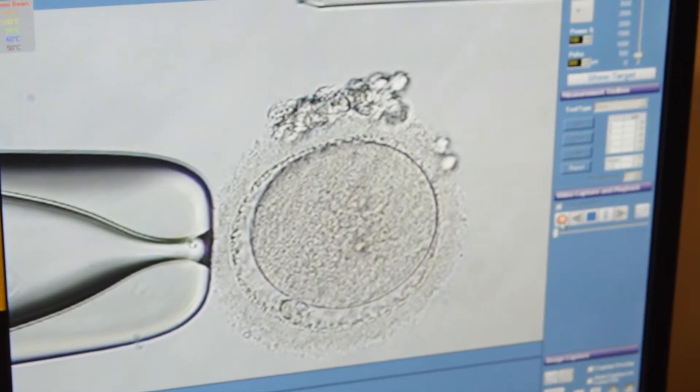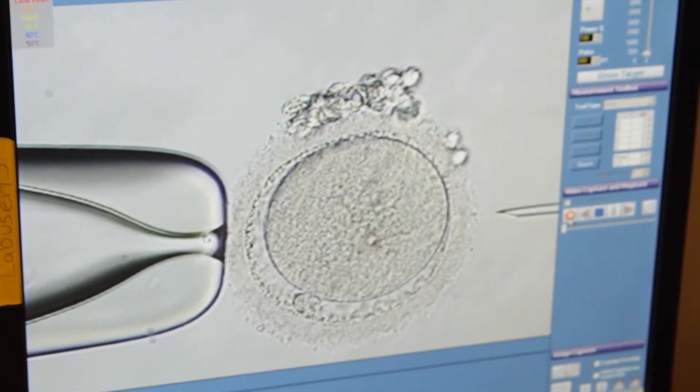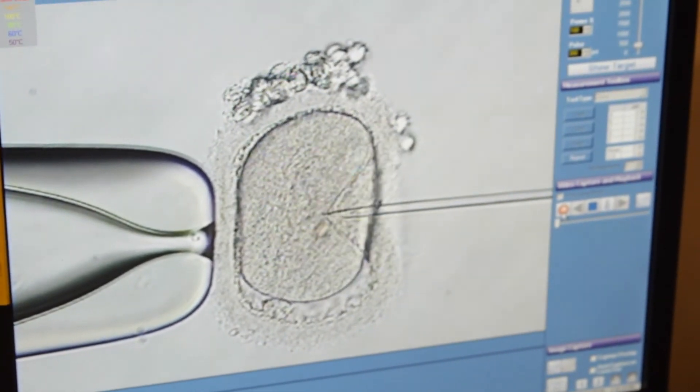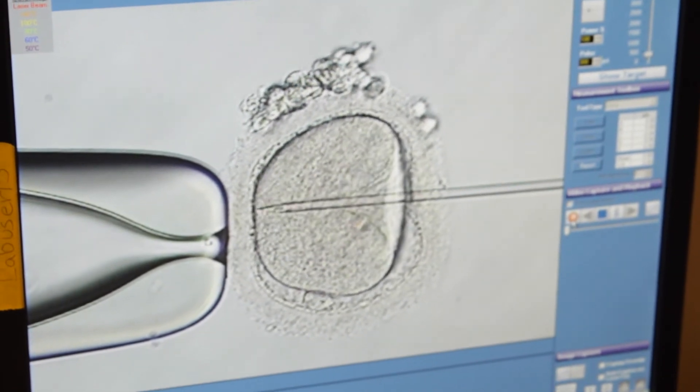Now what Donna is doing is bringing that sperm down to the very tip of the injection pipette. The idea of doing that is that we want to have no extra PVP injected into the egg.